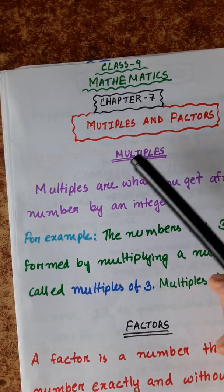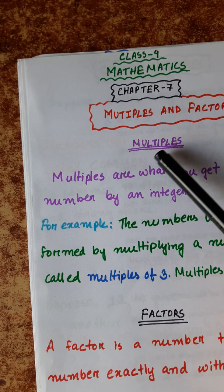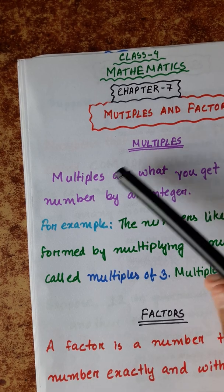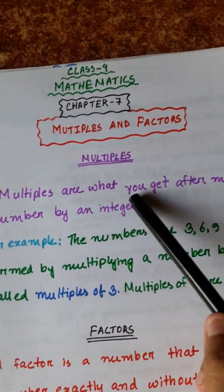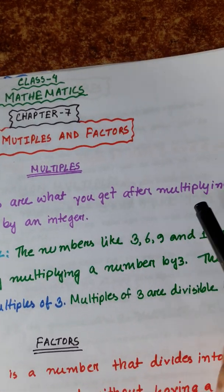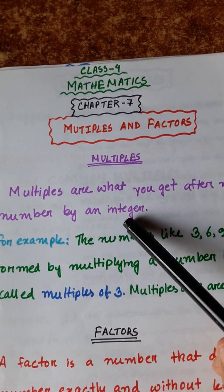That's why we have seen multiples. Multiples are what you get after multiplying a number by an integer.